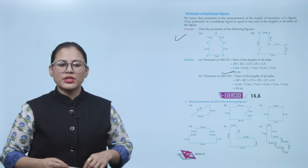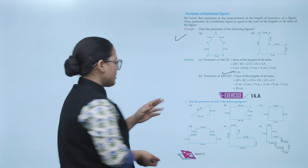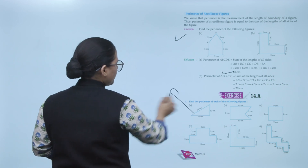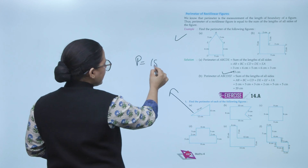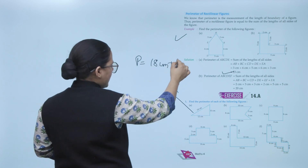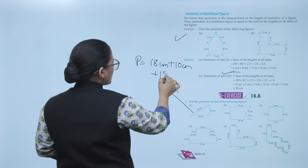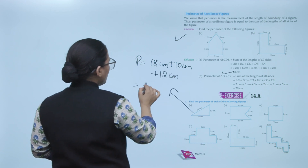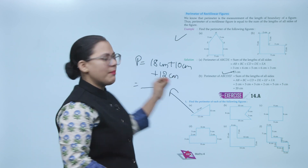Exercise: Find the perimeters of each of the following figures. First figure is a triangle. To find the perimeter, we add all sides: 18 centimeters + 10 centimeters + 12 centimeters = 40 centimeters. That is the perimeter.